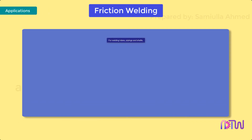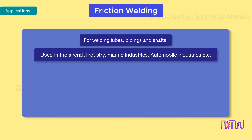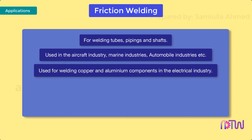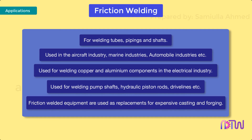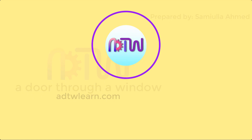Applications: friction welding is used for welding tubes, piping, and shafts in the aircraft, marine, and automobile industries. It is used for welding copper and aluminium components in the electrical industry, and for welding pump shafts, hydraulic piston rods, and drivelines. Friction welded equipment is also used as a replacement for expensive castings and forgings.